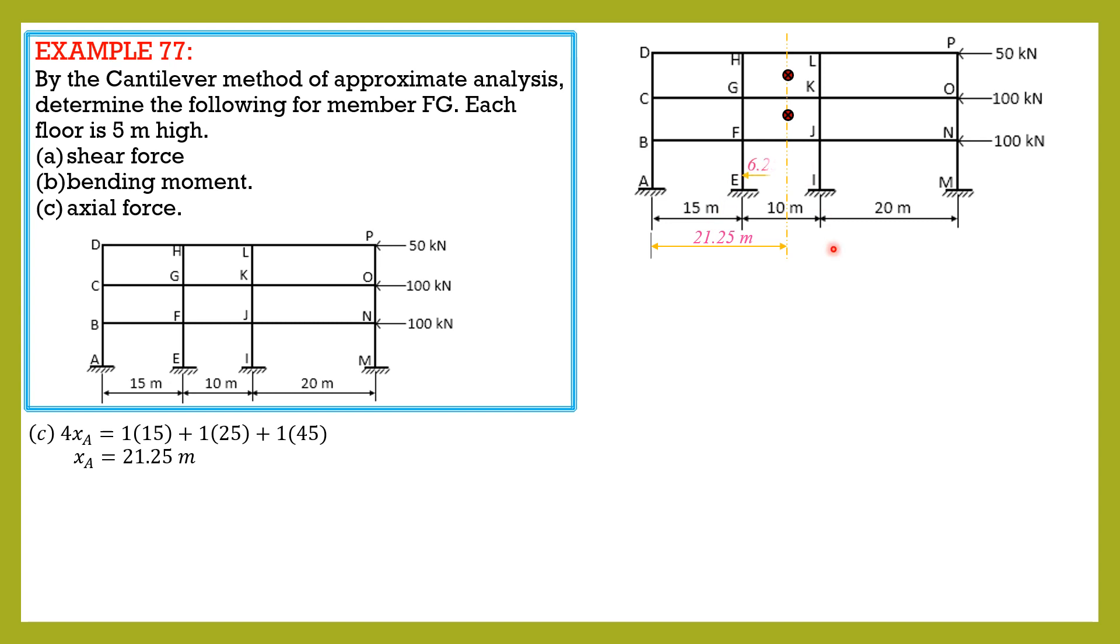So 21.25 minus 15 is 6.25 for this column. Then 10 minus 6.25 is 3.75. Then distance of this column from the centroid. Moment of inertia in level 3 equals moment of inertia in level 2 as well as in level 1.